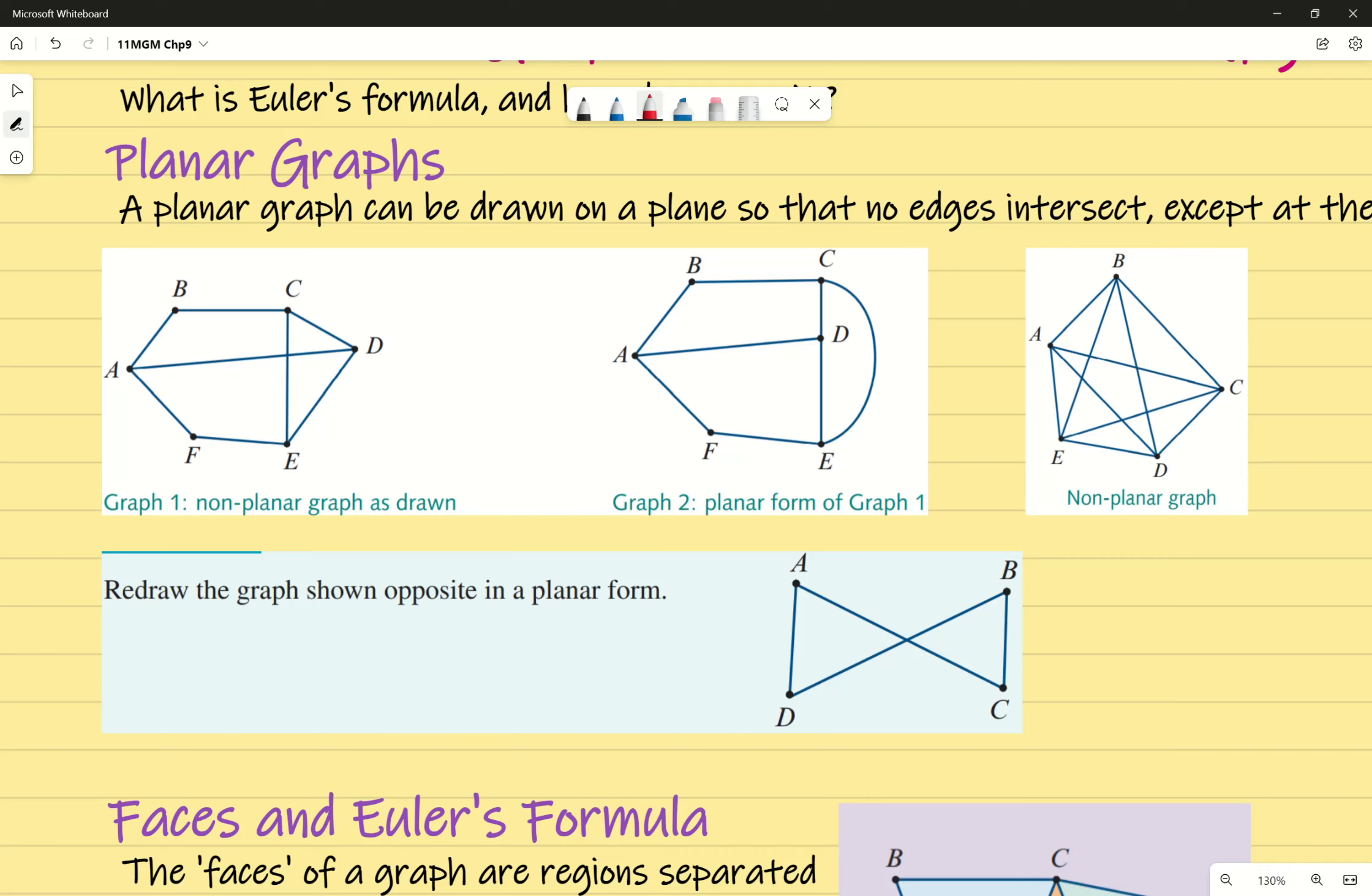In this example, we have to redraw the graph opposite in a planar form. Can I get everyone to give this one a shot? It's super easy. Try to move the edges so that your graph is still isomorphic—callback from exercise 9C—but has no intersections except at the vertices. I'll give you 30 seconds starting now.